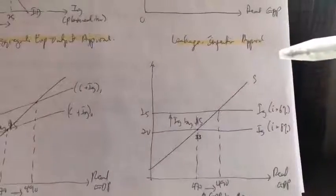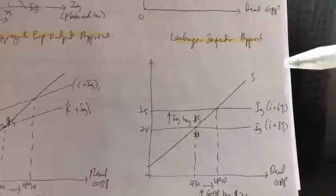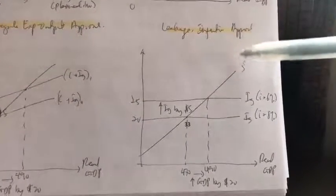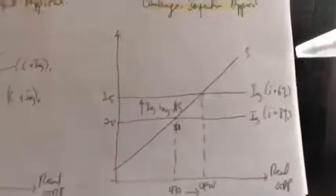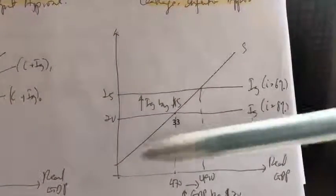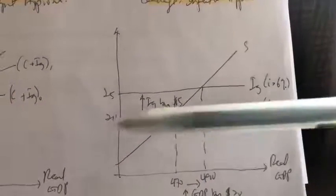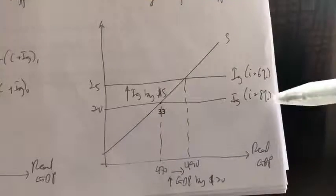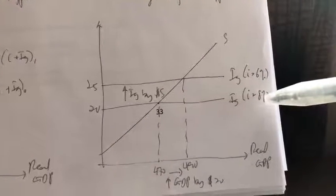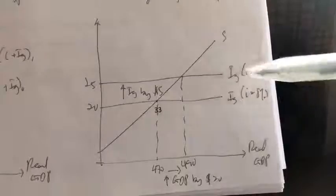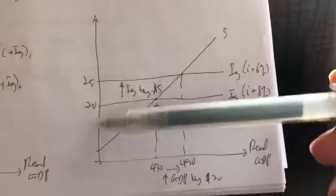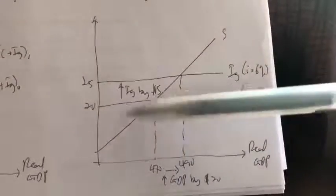Now, let's try to explain the changes in equilibrium GDP and the multiply effect using the leakage injection approach. Okay, right. Initially, our IG was here at $20 billion, right? This is when interest rate was 8%. When interest rate falls to 6%, there's an increase in our investment schedule here.